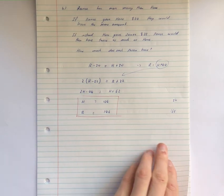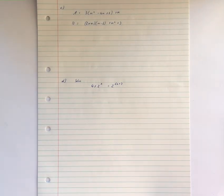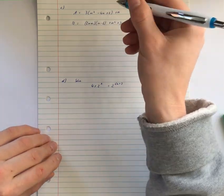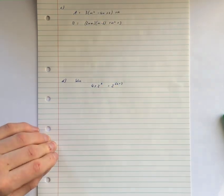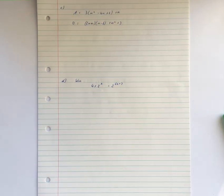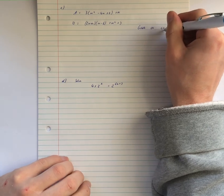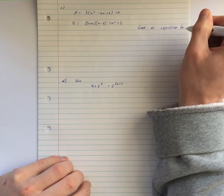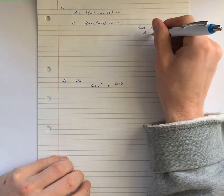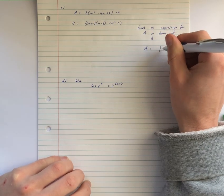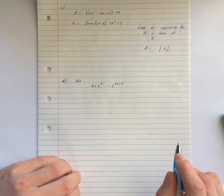Next question: you're given a in terms of n and b in terms of n, and it's asking for an equation with just a and b. We want to write an expression for a in terms of b — an equation with no n's in it.